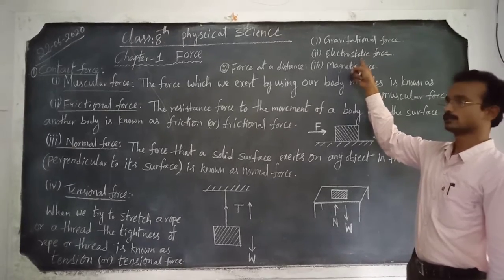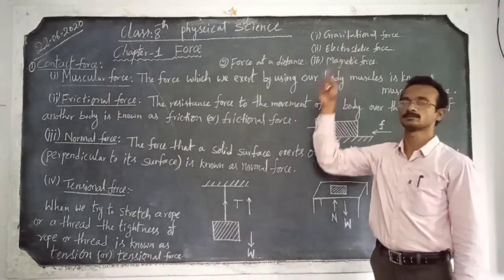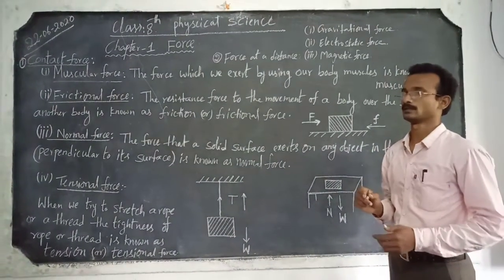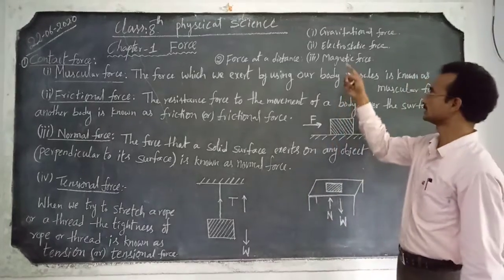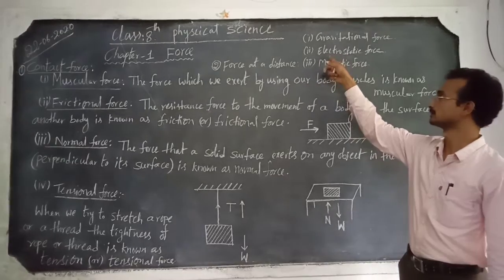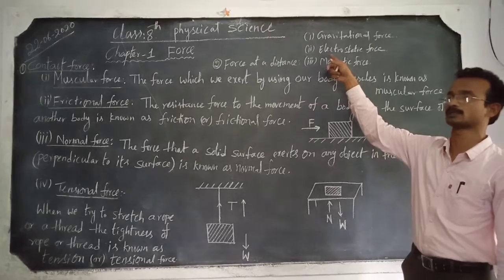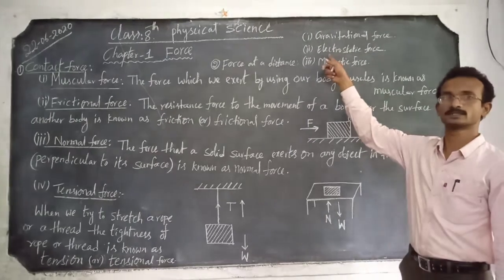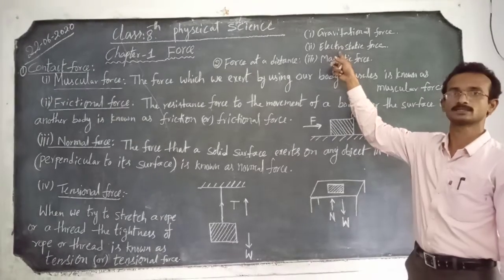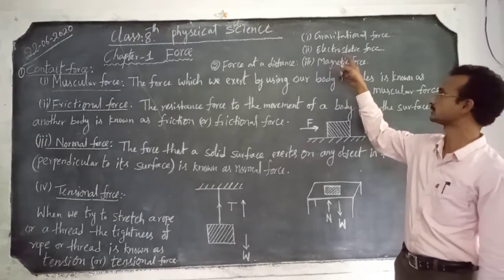Electrostatic force means — for example, when we rub a balloon with a piece of paper, then the piece of paper and the balloon get attracted to each other. The attraction takes place between the charged bodies. After they get charged, the attraction takes place between the piece of paper and the balloon. This attraction force between the charged bodies is known as electrostatic force.